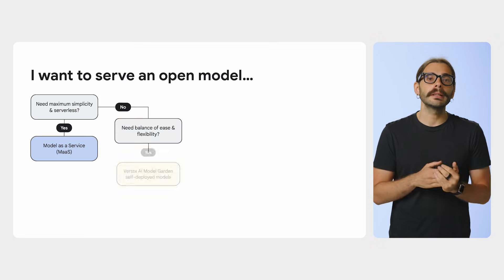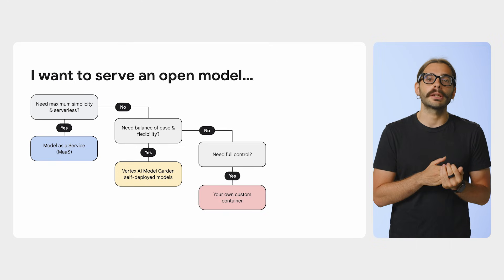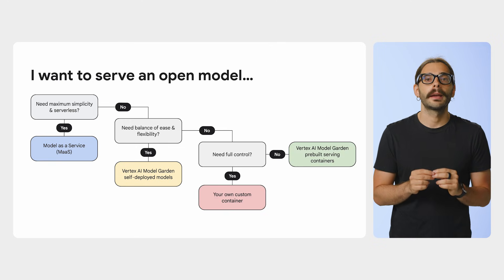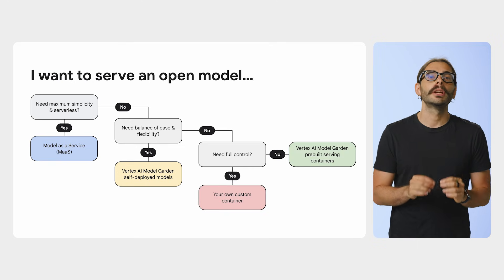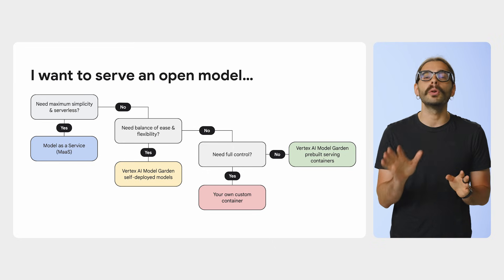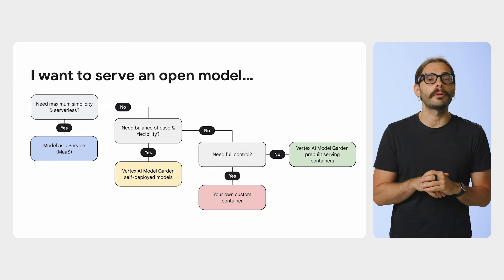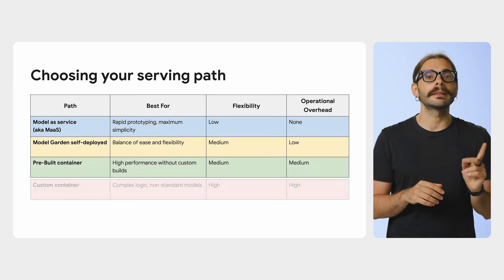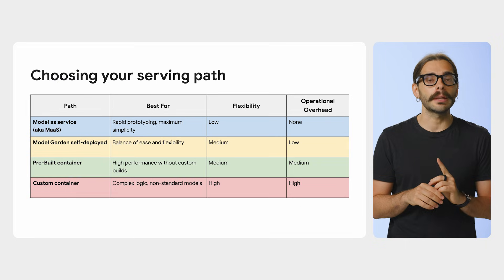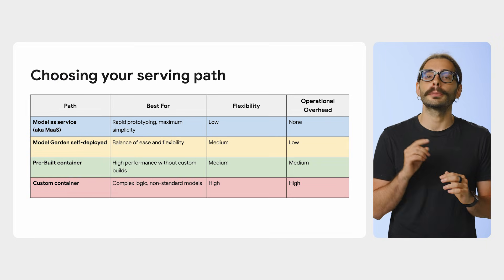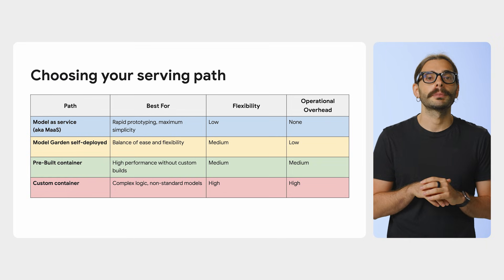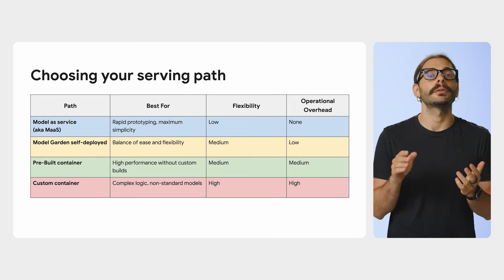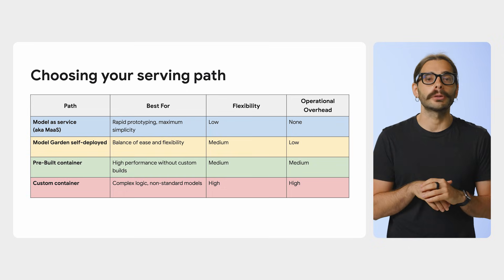So that's our map. These are the core strategies for serving open models on Vertex AI. At this point, you have a better understanding of the entire landscape of options. Remember, the goal isn't to find the single best way, but the best way for your project's needs. This framework is your guide for the rest of our journey together.